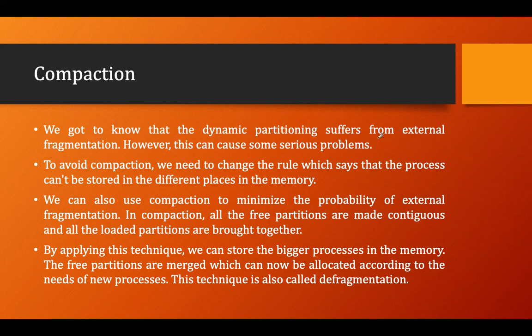We know that dynamic partitioning suffers from external fragmentation, and this can cause some serious problems. To avoid compaction, we need to change the rule which says that a process cannot be stored in a different place in memory. So either we go for non-contiguous memory allocation, or we can use compaction to minimize the probability of external fragmentation. In contiguous memory allocation, the solution is called compaction.